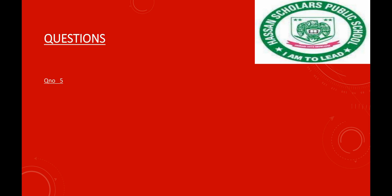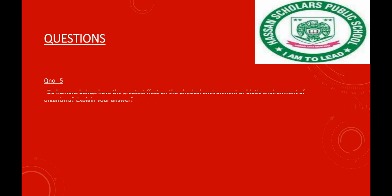We will see question number 5: through this, the meaning is that human beings have the greatest effect on the physical environment of organisms. The human being has an effect on the physical environment such as earth, light, temperature, or the biological environment.